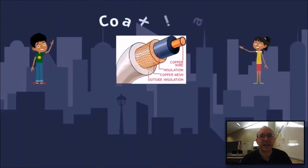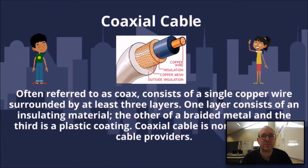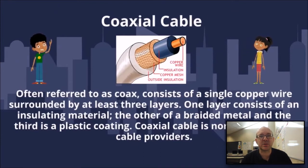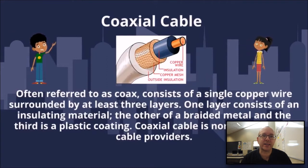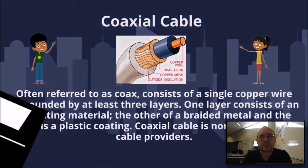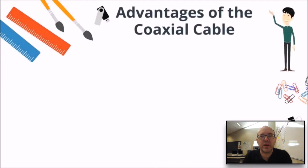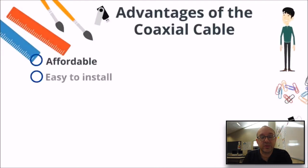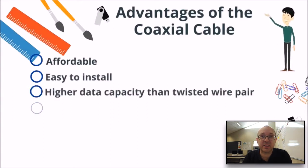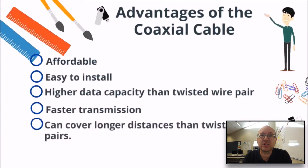Coaxial cable, often referred to as coax, consists of a single copper wire surrounded by at least three layers. One layer is an insulating material, another is a braided metal, and the third is a plastic coating. Advantages of coax: it's affordable, very easy to install, has higher data capacity than twisted pair, and faster transmission.